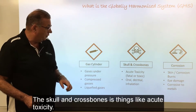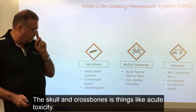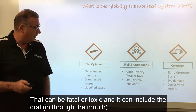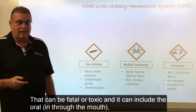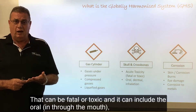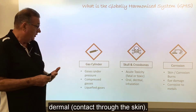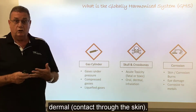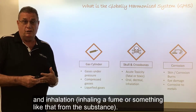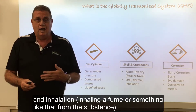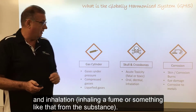The skull and crossbones covers things like acute toxicity — that could be fatal or toxic — and it can include the oral route, which is in through the mouth, dermal contact through the skin, and inhalation, which is inhaling a fume or something like that from the substance.